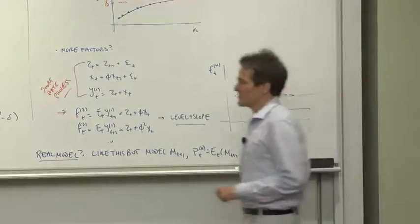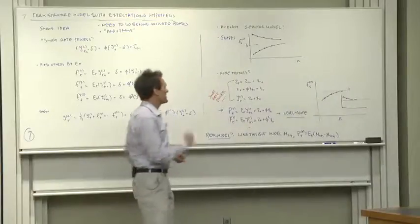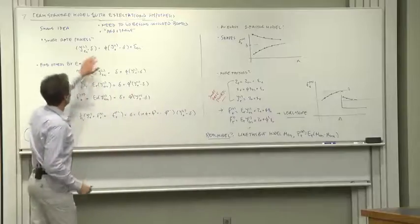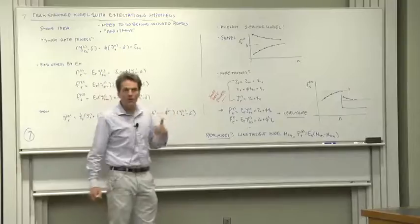So those are the ingredients of a term structure model. But this is the expectations hypothesis. How are we going to produce a real model? Same idea.